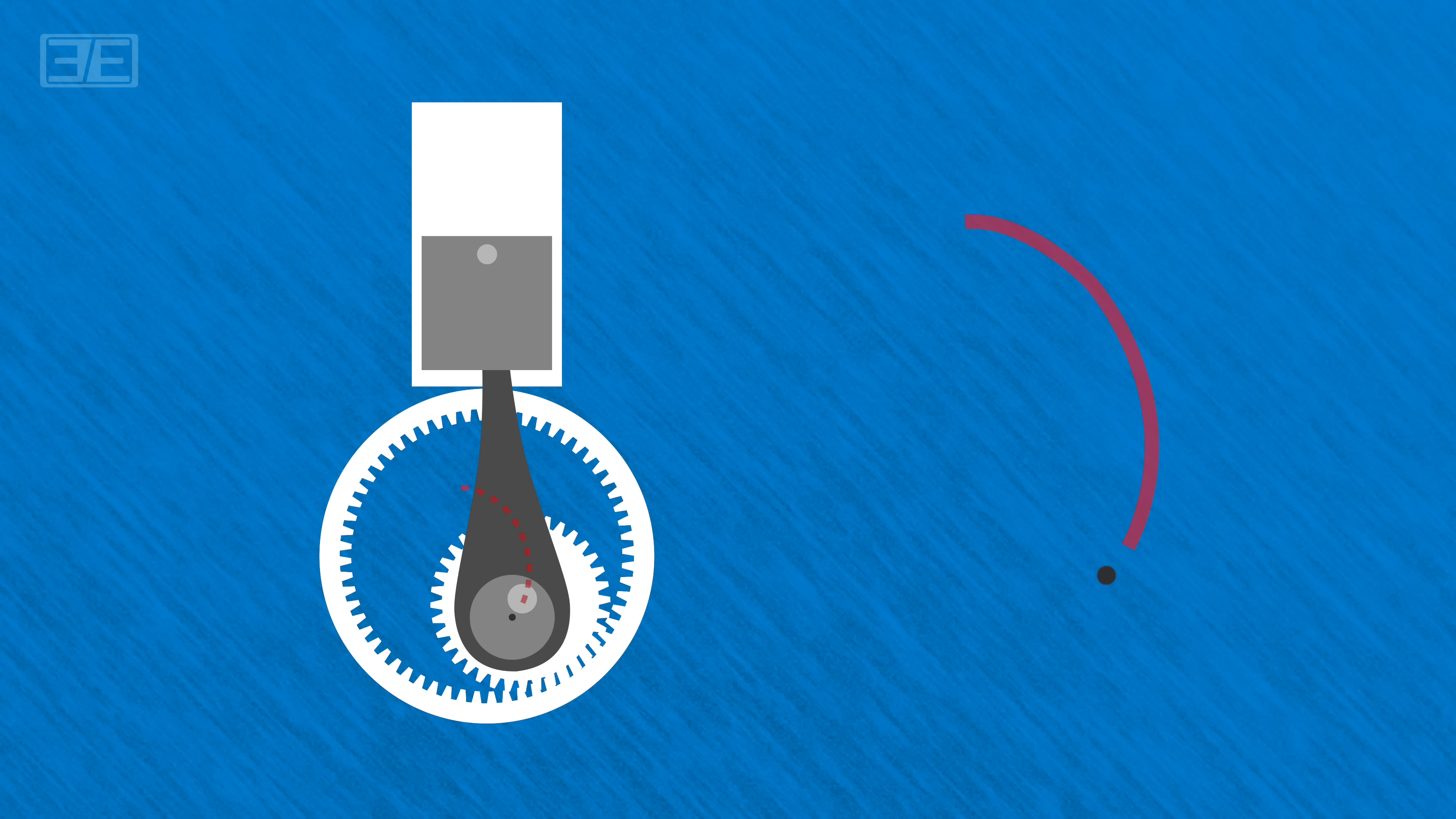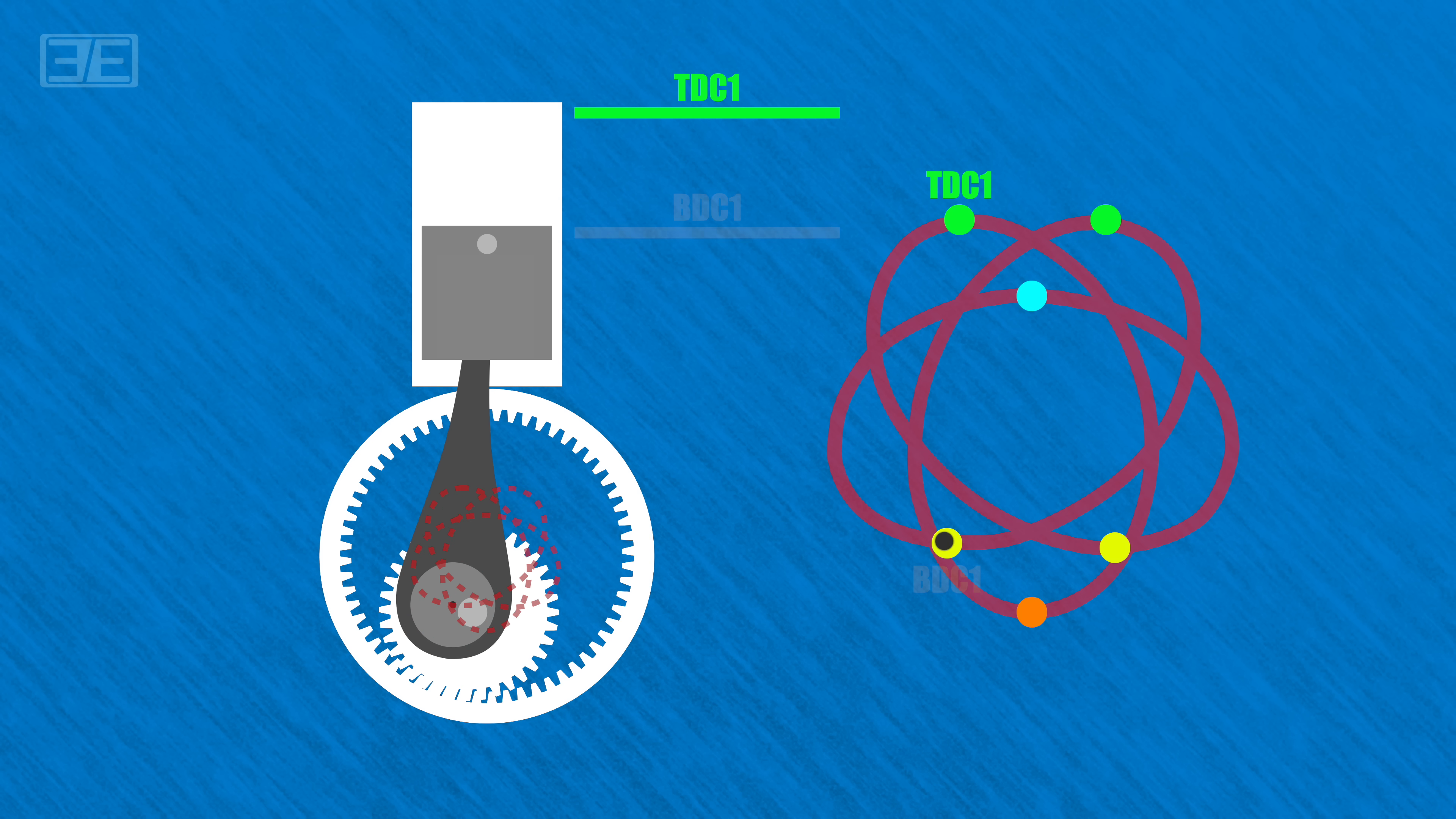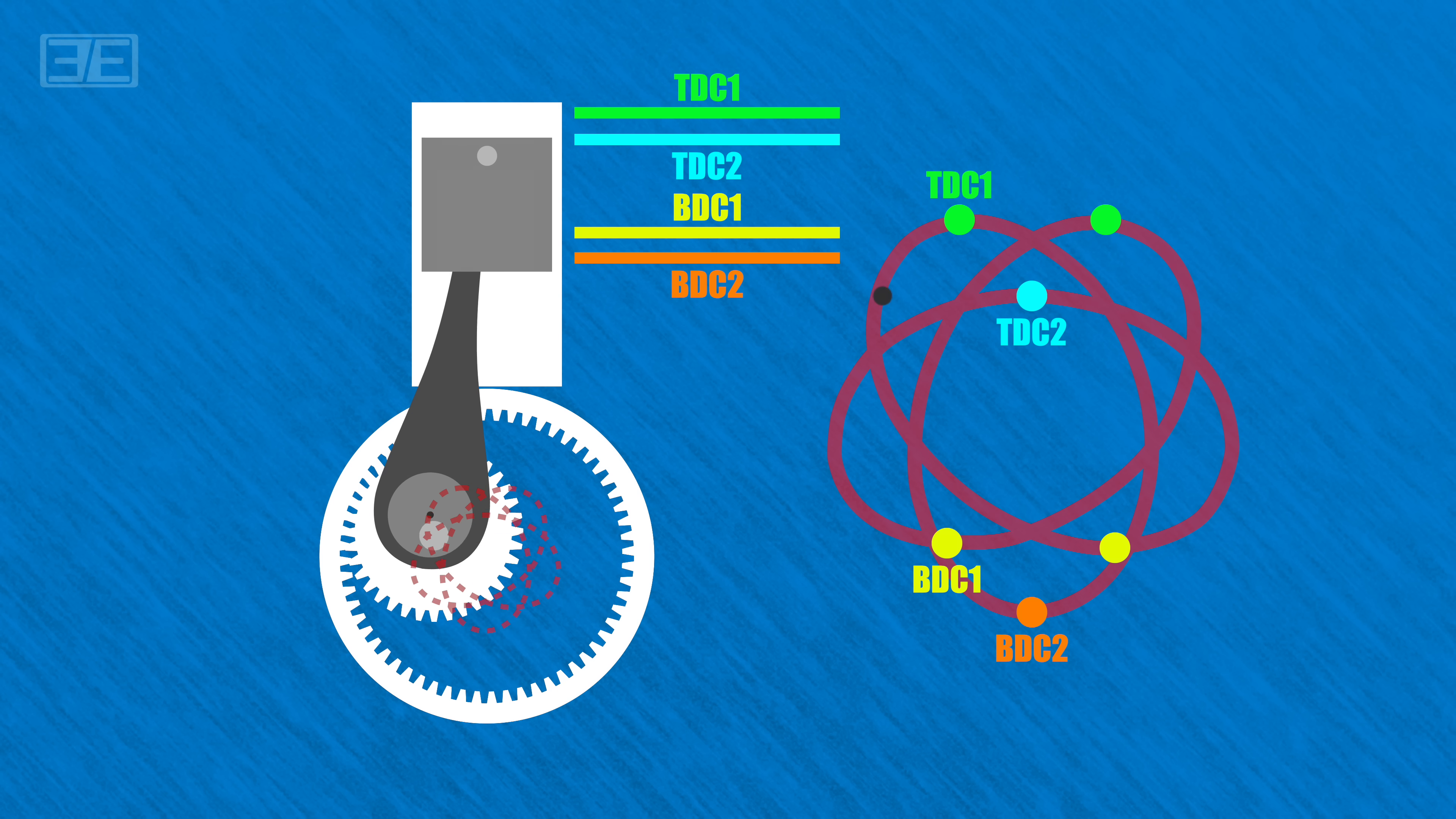So while the crank's rotation is circular, where the connecting rod attaches is not. Because of the offset, the connecting rod follows what is called a hypocycloidal path. You can see this path has three peaks and three valleys, each of which correspond with the piston being at its highest point for that stroke, or top dead center, or the piston's lowest point for that stroke, bottom dead center. And as you can see, the distances of these high and low points differ. Up top, there are two high points and one slightly lower high point. At the bottom, there are two low points and one even deeper low point. So this is how the piston is able to travel different vertical distances depending on which stroke it's on.